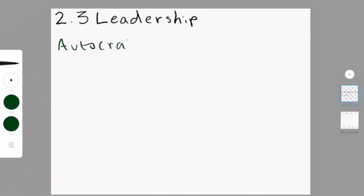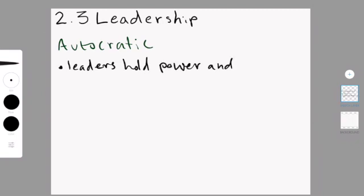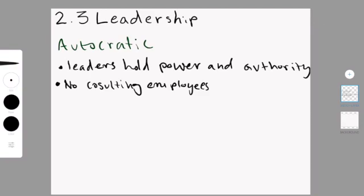So we'll begin with autocratic. In an autocratic leadership style, the leader holds as much power and decision-making authority as they possibly can. They usually do not ask the employees for input or anything like that. They don't do any consulting. However, technically speaking, you could still be autocratic and ask a little bit. But for a more simplistic version, we'll say no consulting happens at all.